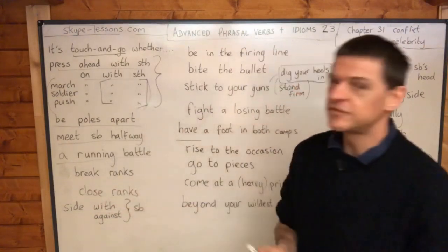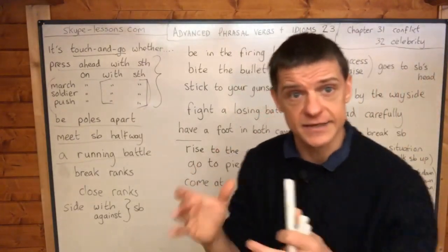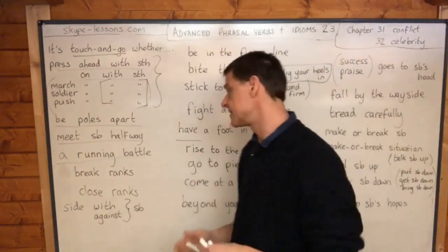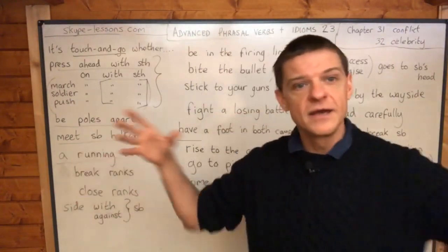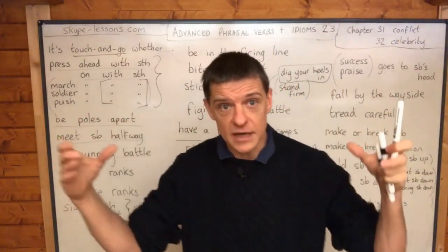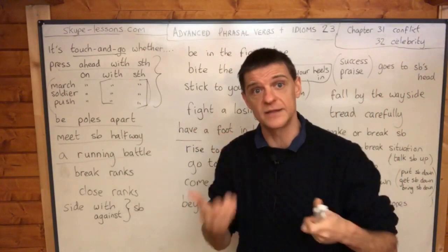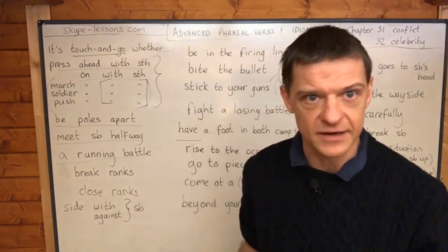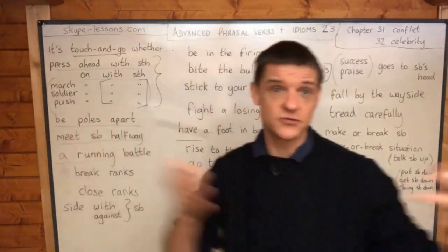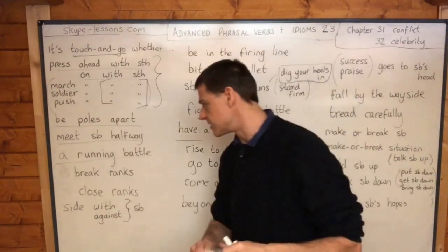If somebody 'breaks ranks', it means they are in a certain group but they leave or betray that group for some reason. These are military expressions from the chapter on conflict. 'Close ranks' is when people of a group all suddenly come closer together to defend each other — think of Roman soldiers closing together with their shields up. When people 'close ranks' they group together to defend each other, but when they 'break ranks' they betray the group and start working for the enemy.